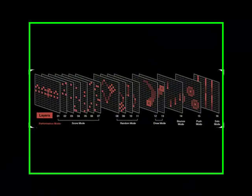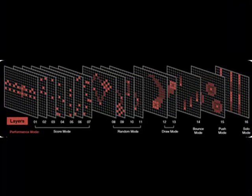Each of the 16 layers within the Tenorion are hard-coded to MIDI channels 1 through 16. So if you go into Ableton Live and set up corresponding tracks listening on those MIDI channels, you can use the Tenorion to drive MIDI devices and VSTs within Ableton Live.